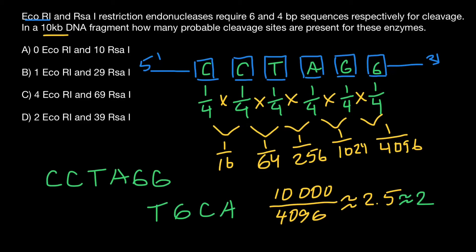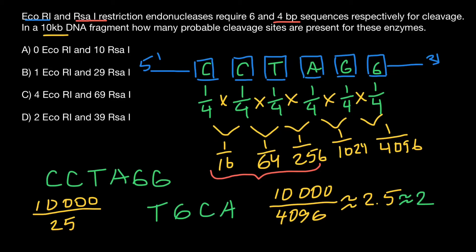Now let's consider the recognition site for RSA1, which consists of four base pairs. That means it's going to cut the double-stranded DNA every 256 base pairs. So 10,000 base pairs divided by 256 is roughly 39 times.